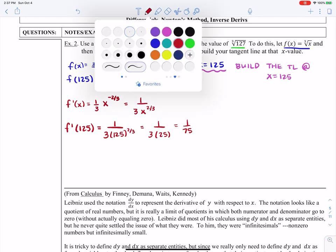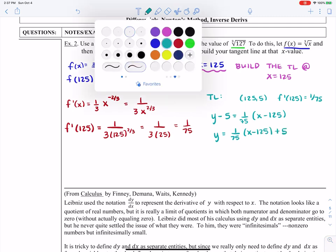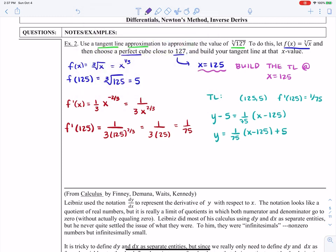So now we have enough information to make a tangent line. And that's exactly what we're going to do. We've got our point, 125 and 5. And we have a slope of 1 over 75. So our tangent line is going to be y minus 5 is equal to 1 over 75 times x minus 125. Let's solve it for y. So 1 over 75 times x minus 125 plus 5.